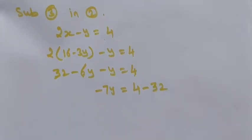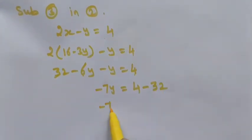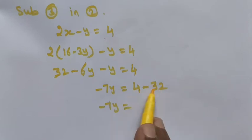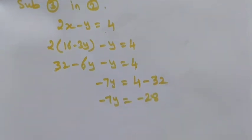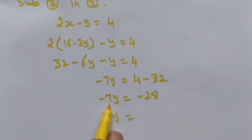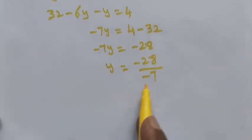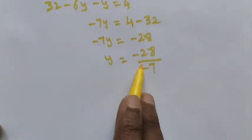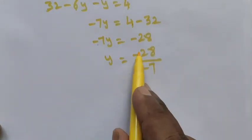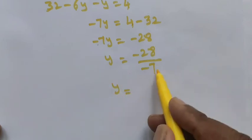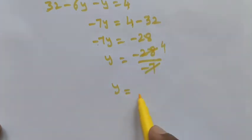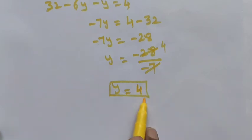So minus 7y is equal to minus 28. To find y, divide both sides by minus 7. Both numerator and denominator have the same sign, so the negatives cancel, and y is equal to 4.